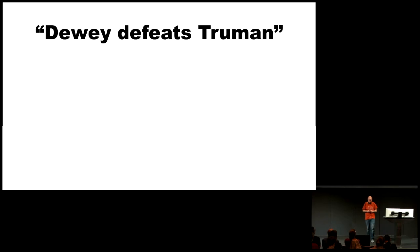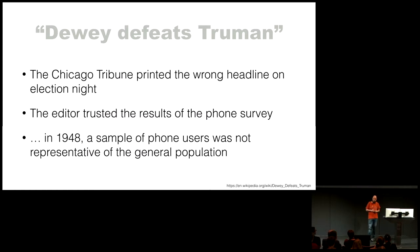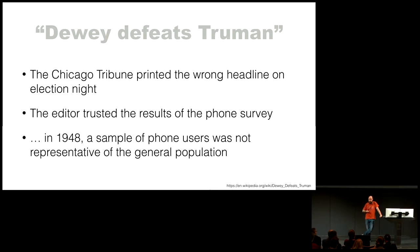As a classic example — a big headline back in the 40s: 'Dewey Defeats Truman.' That's Truman, President Truman, the day he was elected president, waving a newspaper stating the opposite story. The newspaper from Chicago had to go to the printer before they had the real numbers, and they trusted a phone survey from the previous few days. But this is 1948 — not everybody had a phone at home. The people who picked up the phone to answer the survey were definitely not representative of the general population — they were upper class, rich people at the time. That's what happens when you don't sample correctly and don't get a representative subset.